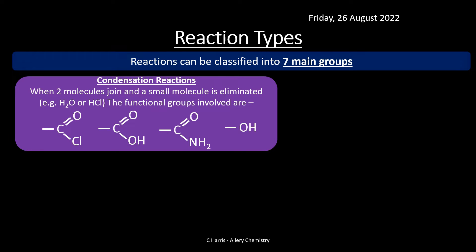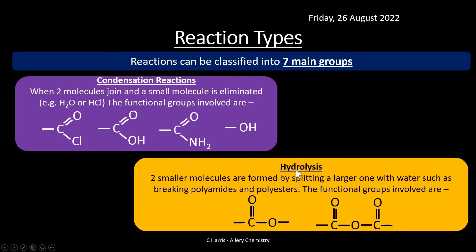Condensation reactions involve emitting a small molecule — either water or HCl — when two molecules join. Functional groups involved include acid chlorides and amides in year two, carboxylic acids, and alcohols. Hydrolysis — hydro meaning water, lysis meaning to split — is the splitting of a molecule using water to form two smaller molecules. Examples include breaking polymers apart or breaking esters, which you've seen previously.